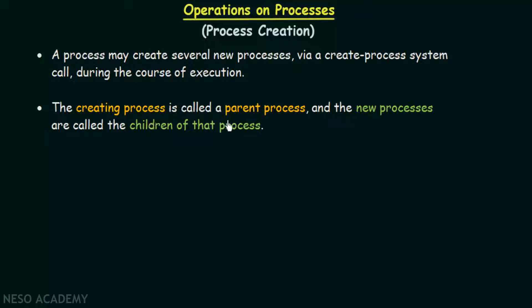The creating process is called a parent process and the new processes are called the children of that process. So one process can create many other processes under it during the course of execution. The process doing the creating is the parent process, and the processes created by the parent are known as the children of that process.